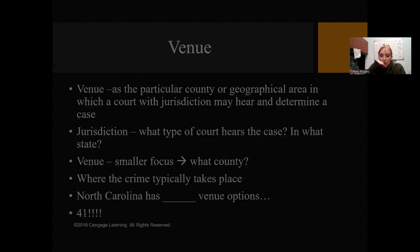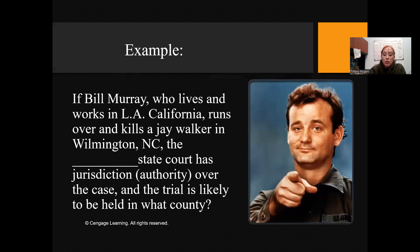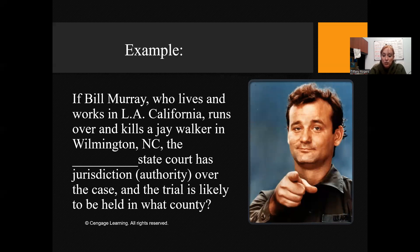Here are all our court districts — this is the venue for each offense depending on where it occurred. If we have a state crime we go with the local level for that venue within that county. For example: Bill Murray lives and works in California, but he kills a jaywalker while going through Wilmington, North Carolina. Which state court has jurisdiction? It's where the crime event happens, not related to the offender — so North Carolina state court has jurisdiction, and the venue would be New Hanover County.